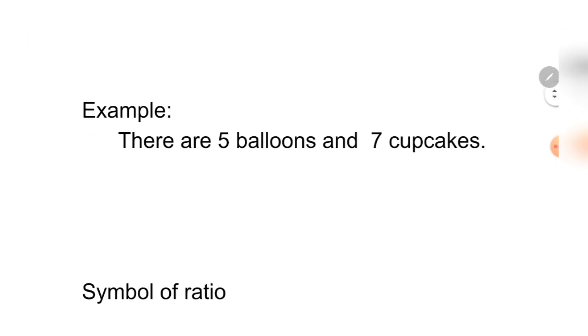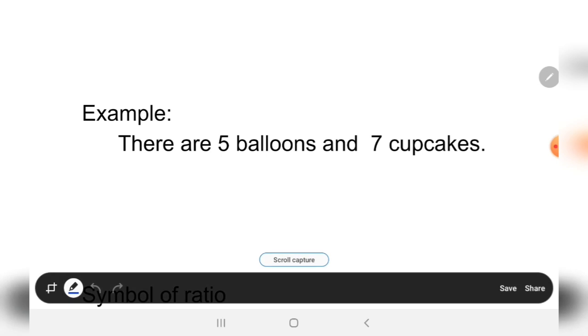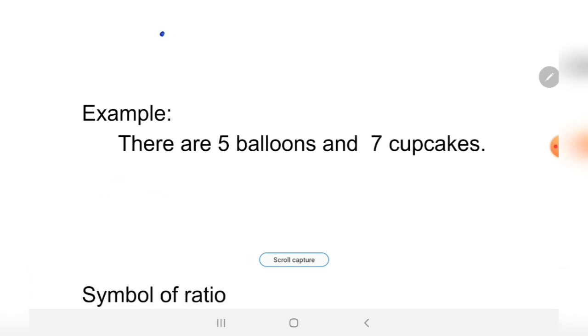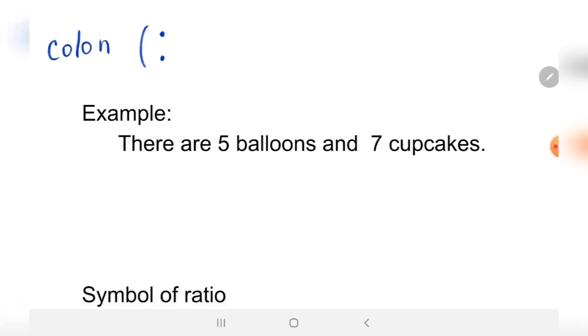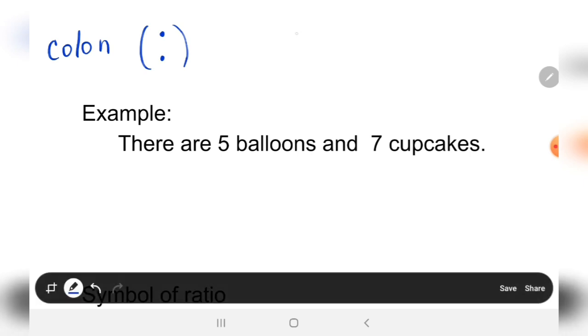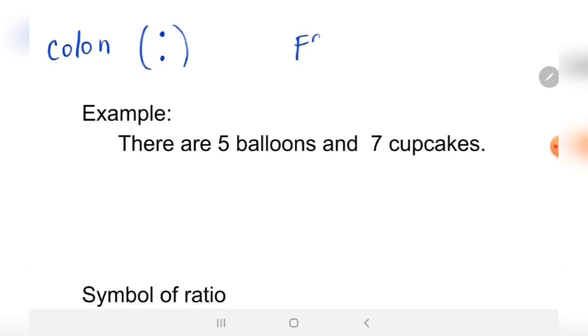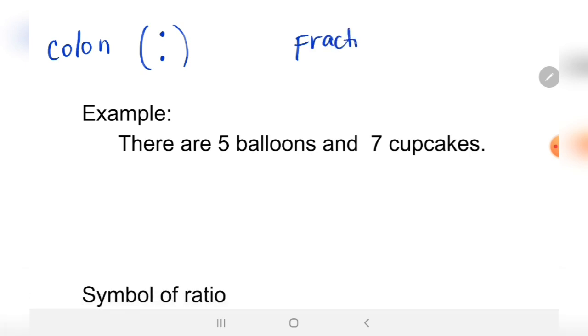To better understand what ratio is, let's take an example. Example number one: there are five balloons and seven cupcakes. In writing ratio, there are two ways. First is to use the colon sign. The second one is the fraction form.